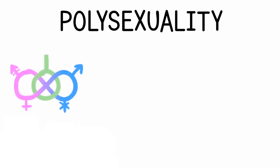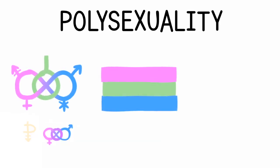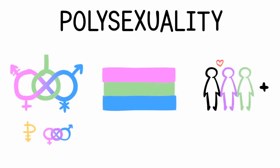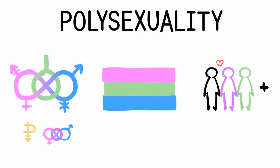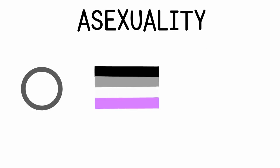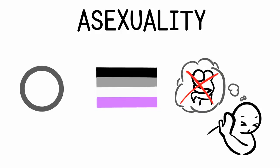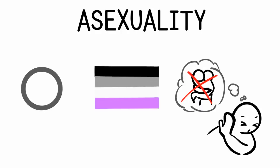Five: polysexuality. Polysexuality refers to people who are attracted to two or more genders. Typically bisexuality and pansexuality are types of polysexuality, though not all people who are polysexual use these terms. Six: asexuality. Asexuality is one of the lesser known sexualities. It refers to someone who doesn't experience sexual attraction to any gender. This doesn't mean, however, that they never have relationships or sex, which are common myths about asexuality.